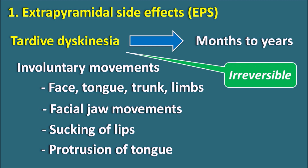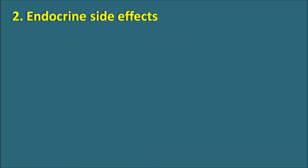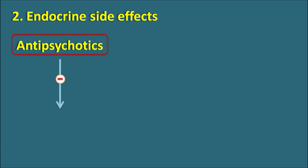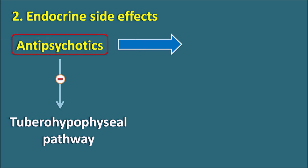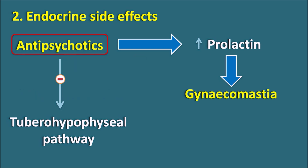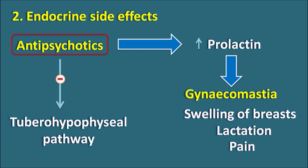In summary, extrapyramidal side effects progress through four phases: acute dystonias, then akathisia, then Parkinson-like symptoms, and finally tardive dyskinesia. The second type of dopamine-related side effects are endocrine side effects. Antipsychotics block the tubero-hypophyseal pathway, increasing prolactin levels, which results in gynecomastia — enlargement and swelling of the breast — along with increased lactation and breast pain.